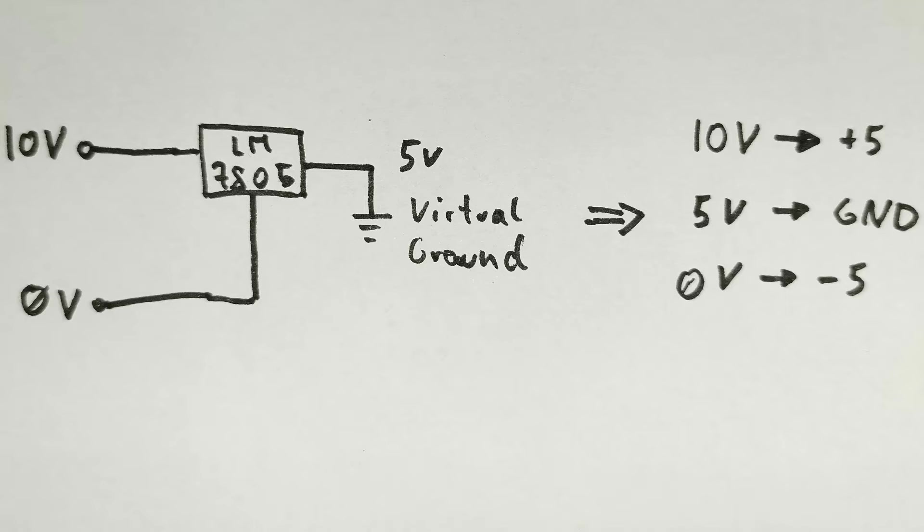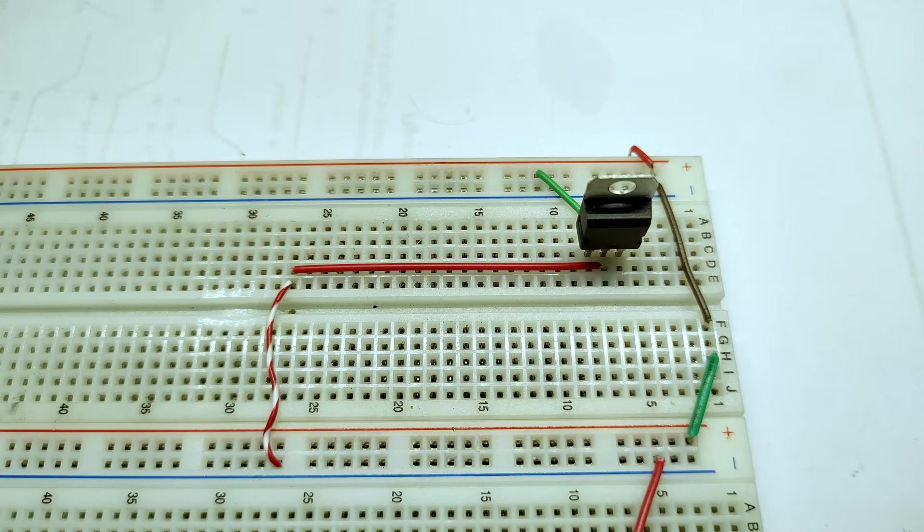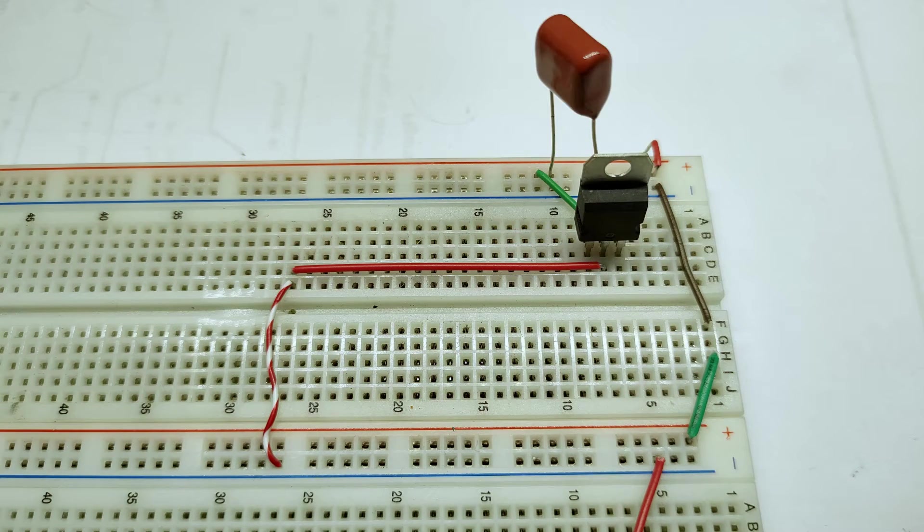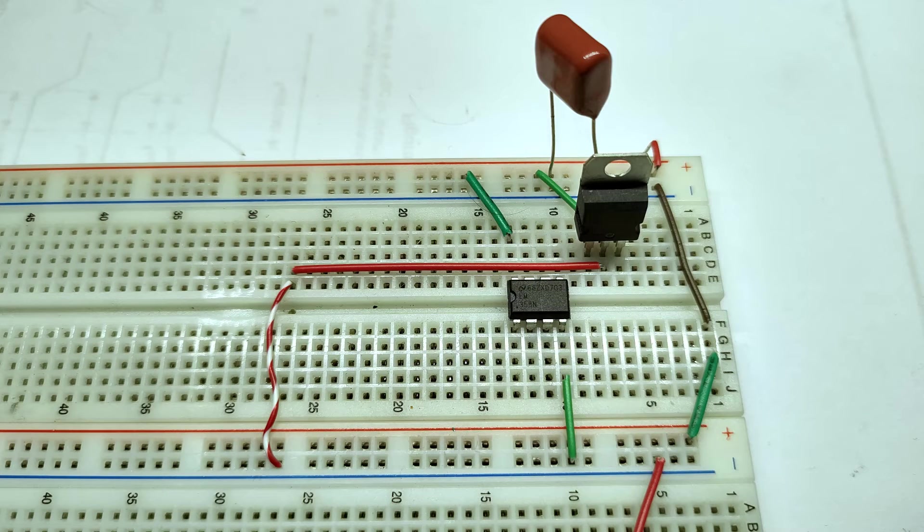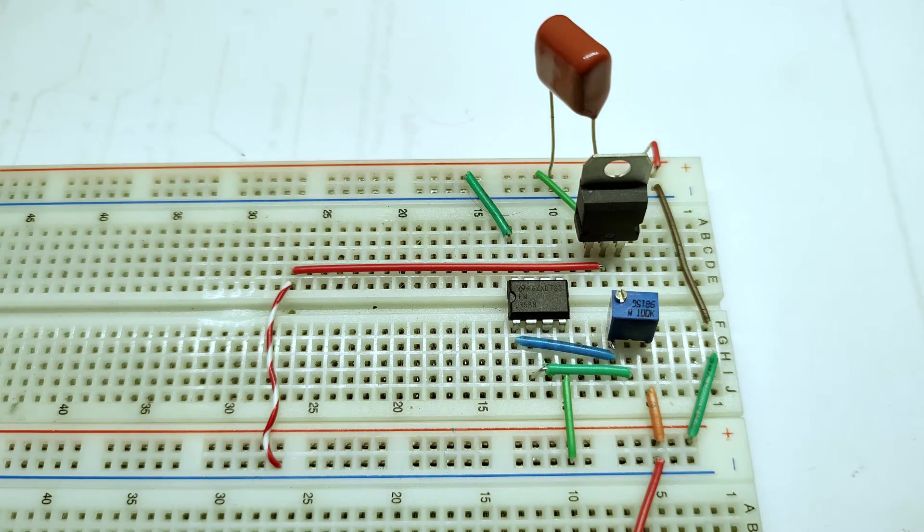Adding a capacitor to smooth out the voltages in case of noise is always good practice. After that we can insert our op amp, in my case an LM358, and connect it to positive and negative. After that we can add our potentiometer and connect it.